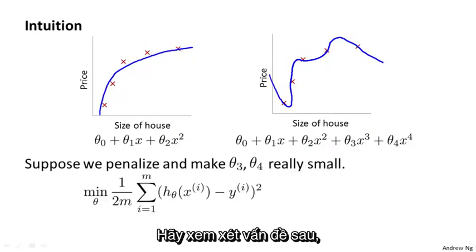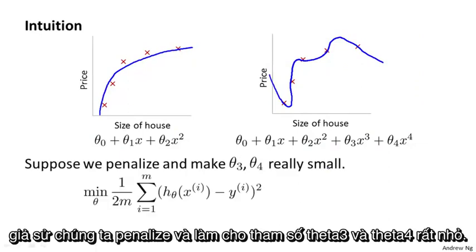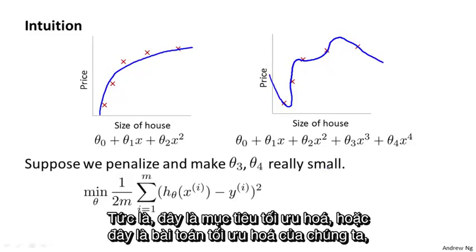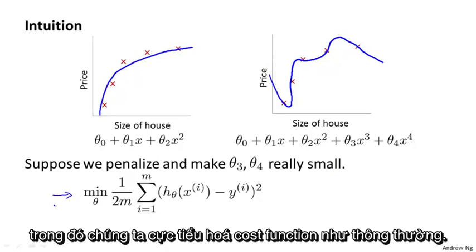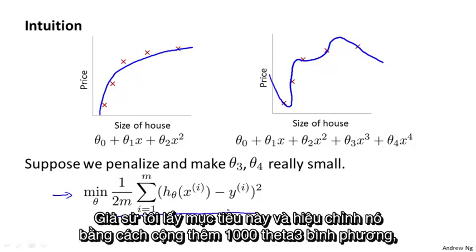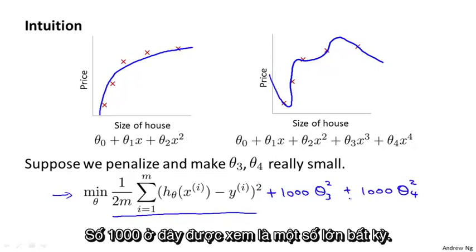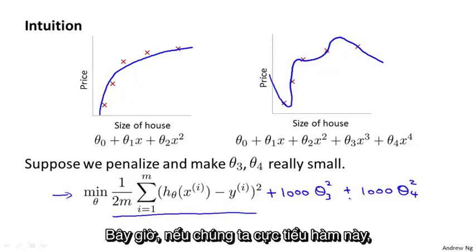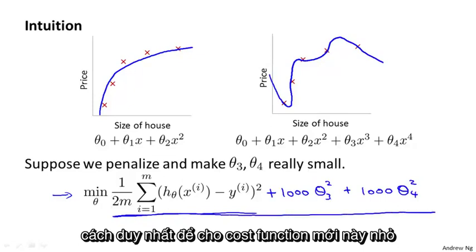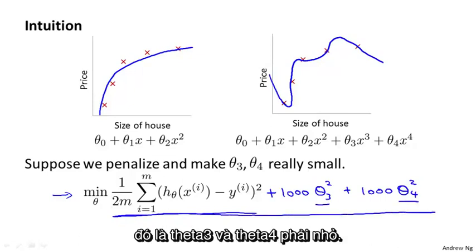Consider the following. Suppose we were to penalize and make the parameters theta 3 and theta 4 really small. Here's what I mean. Here's our optimization objective, where we minimize our usual squared error cost function. Let's say I take this objective and modify it and add to it plus 1,000 theta 3 squared plus 1,000 theta 4 squared. 1,000 I'm just writing down as some huge number. Now, if we were to minimize this function, the only way to make this new cost function small is if theta 3 and theta 4 are small.